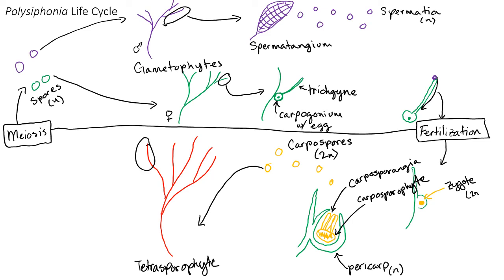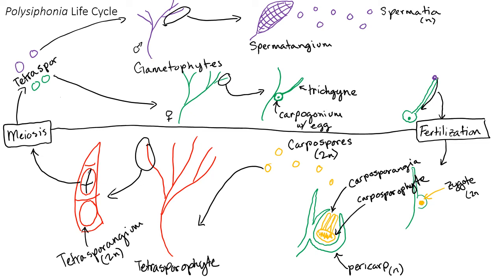If we zoom in on one of those tetrasporophyte branches, they're divided up into these compartments, the cells. And within each of those cells you'll have a tetrasporangium that undergoes meiosis to produce tetraspores. The tetrasporangium is diploid, but once it undergoes meiosis, those tetraspores are haploid.